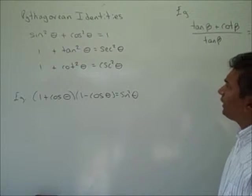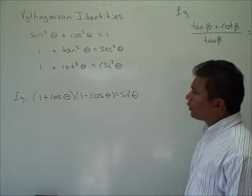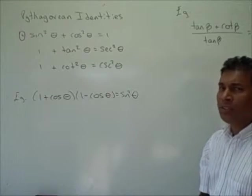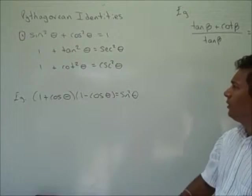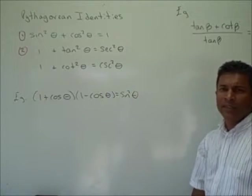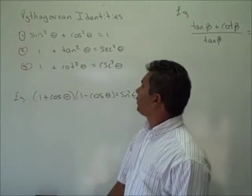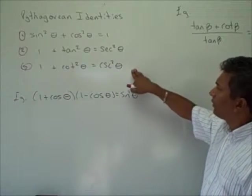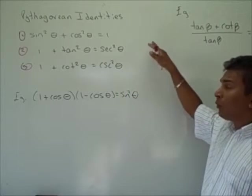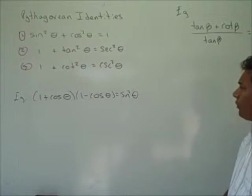Here we have three additional identities called the Pythagorean identities. The first is: sine squared theta plus cosine squared theta equals 1. The second is: 1 plus tangent squared theta equals secant squared theta. The third is: 1 plus cotangent squared theta equals cosecant squared theta. You will need to remember all these identities because throughout the semester we will be using them over and over again.